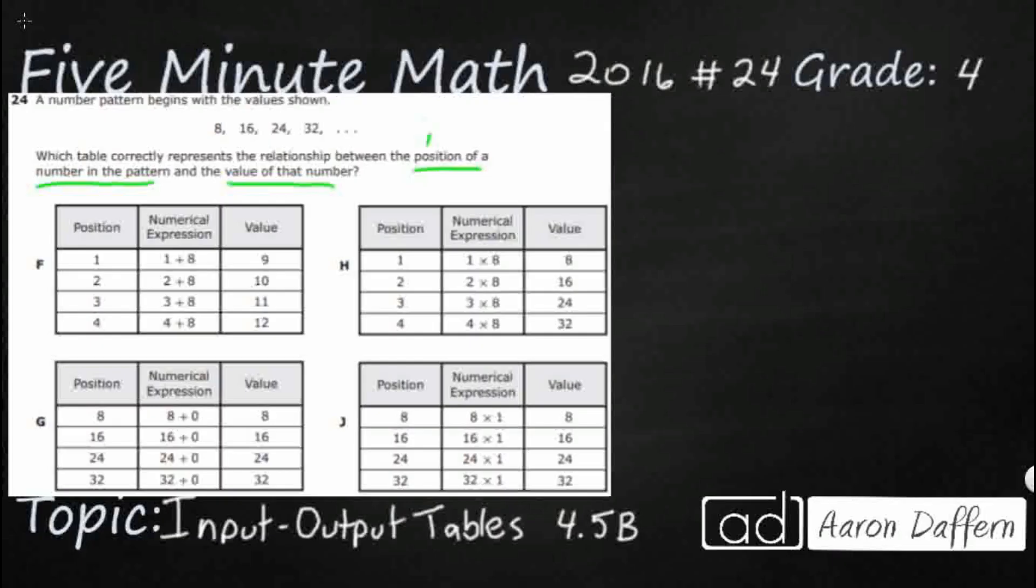They really give us the two things that we're looking for here: the input is the position in the pattern, and then we've got our output which is the value. So since they gave us this in order, we could just label these as 1, 2, 3, and 4. If we wanted to, we could make our own little table and compare.